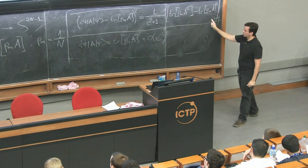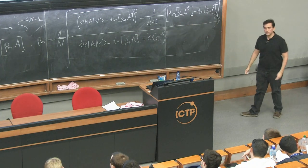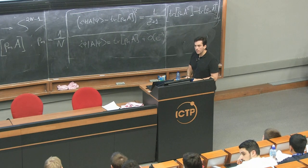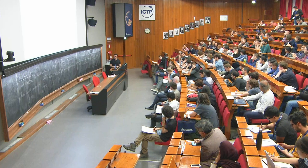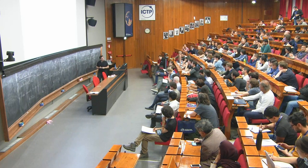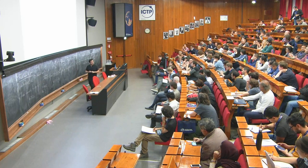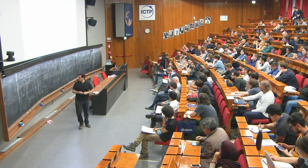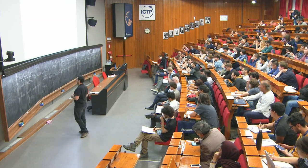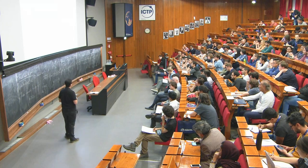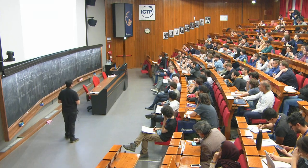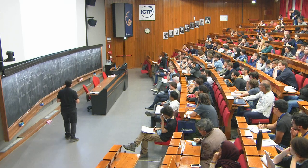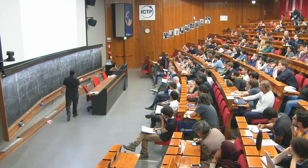We can write this as ⟨ψ|A|ψ⟩ = Tr(ρ_m A) + corrections of order e^{−S}. This is the more precise statement.